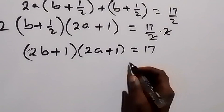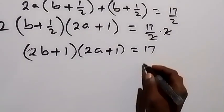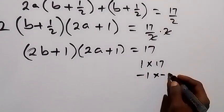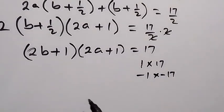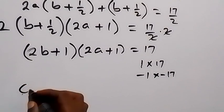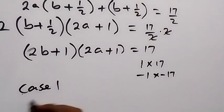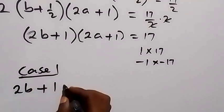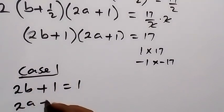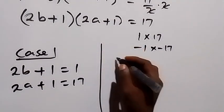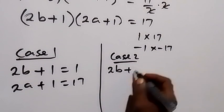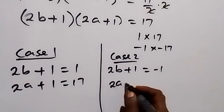Now we have two numbers multiplied together giving us 17. There are two possible cases: 17 can be written as 1 times 17, and also as minus 1 times minus 17. For Case 1, we have 2b + 1 equals 1 and 2a + 1 equals 17. For Case 2, we have 2b + 1 equals minus 1 and 2a + 1 equals minus 17.